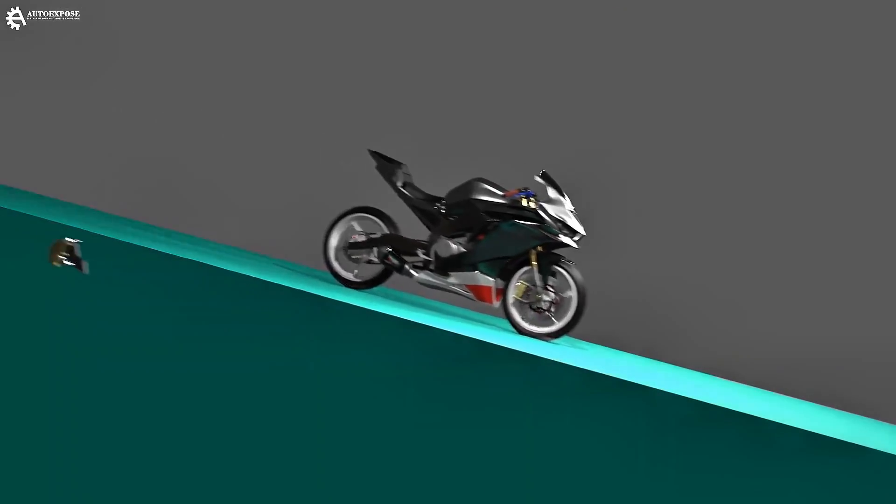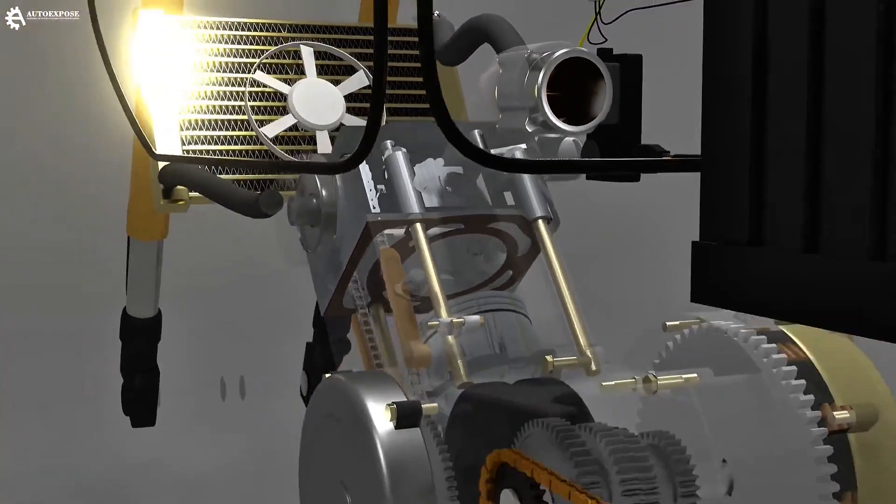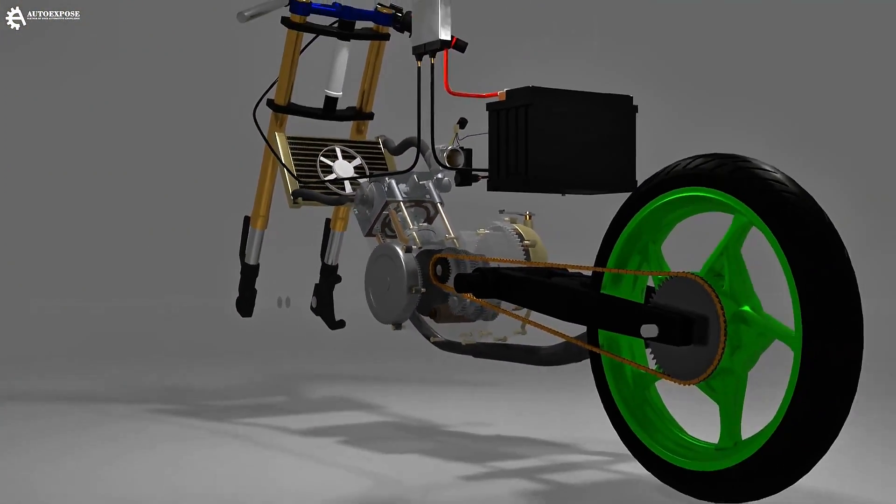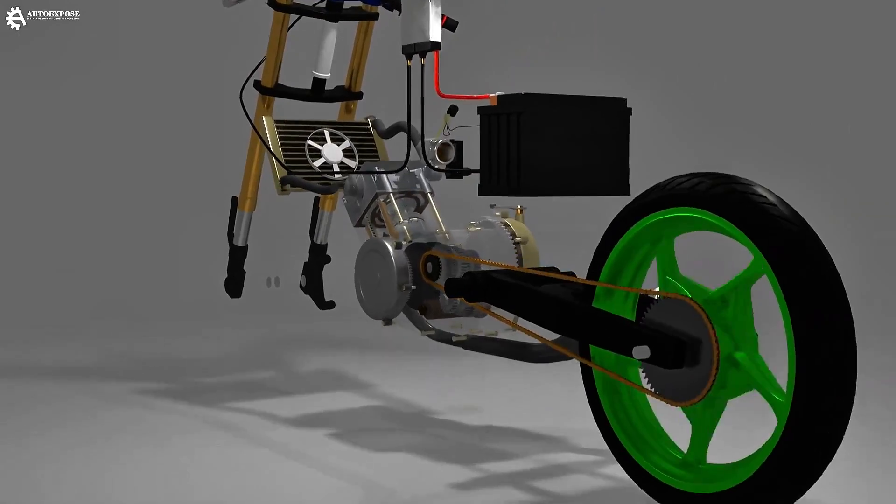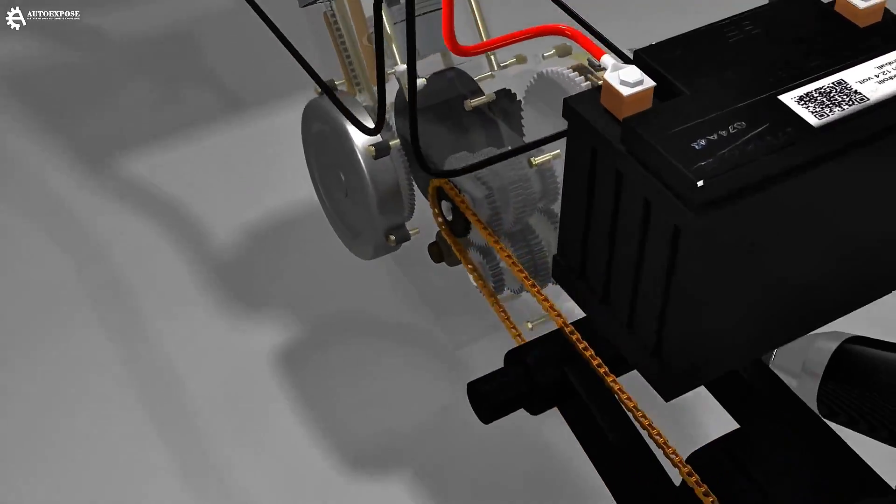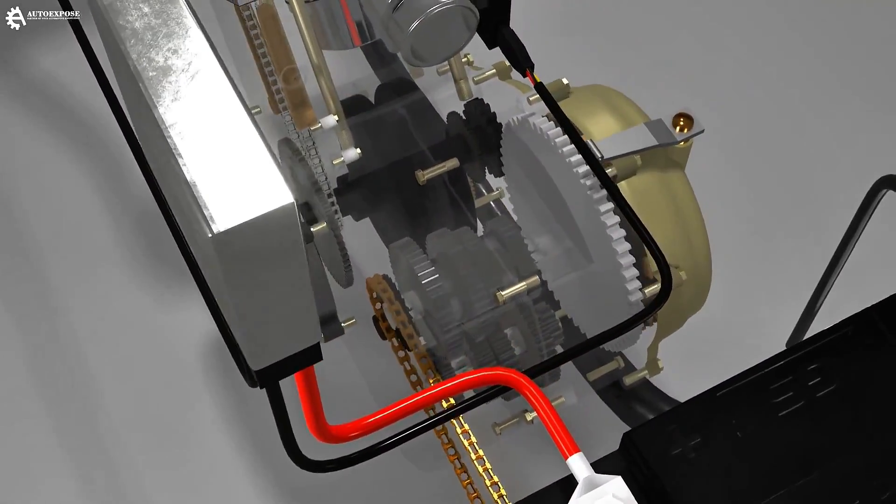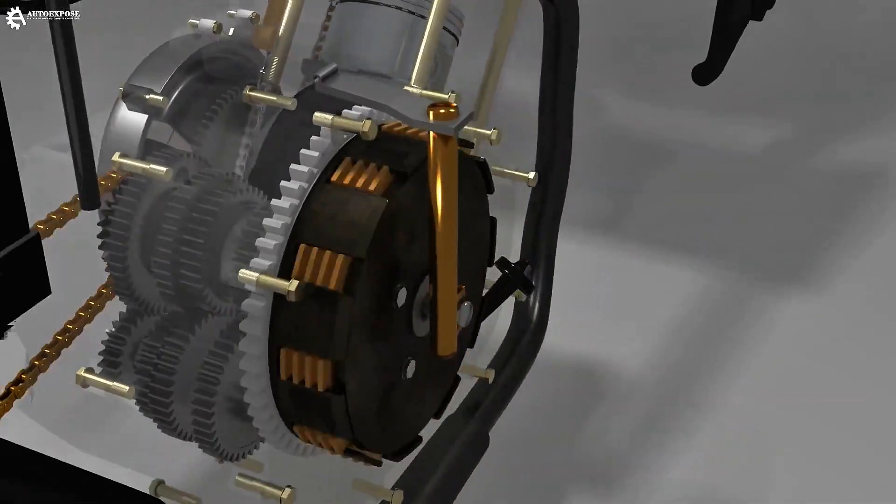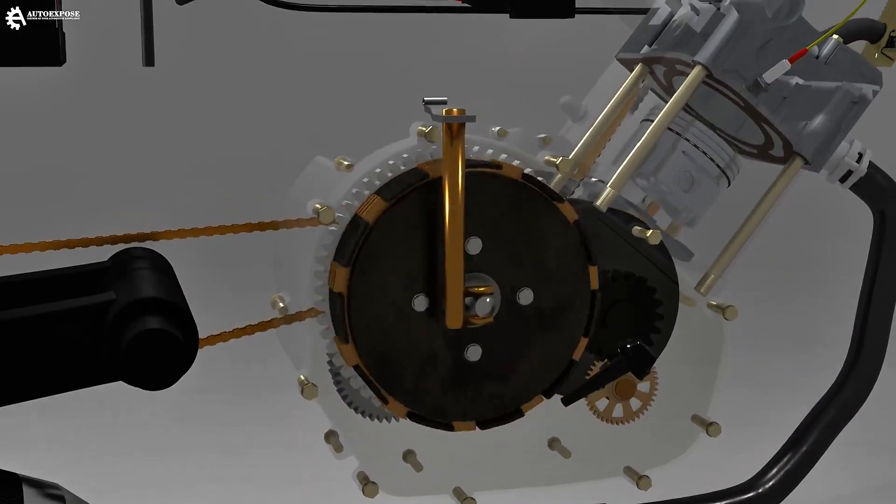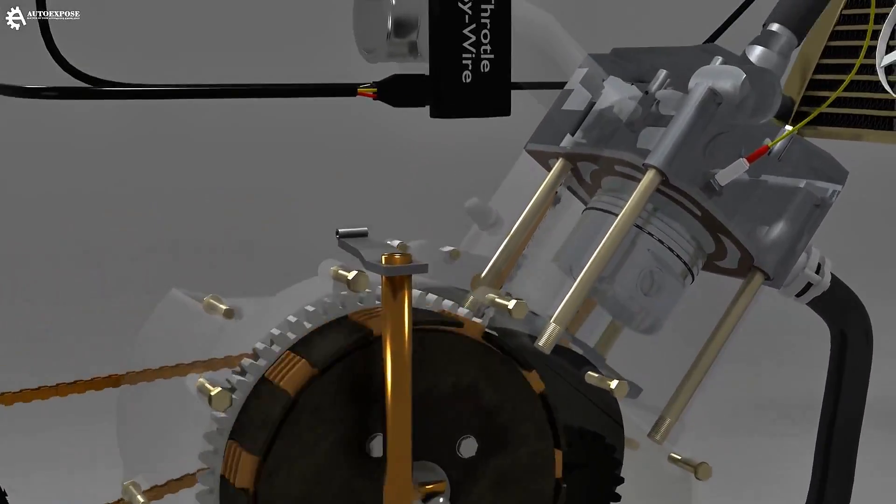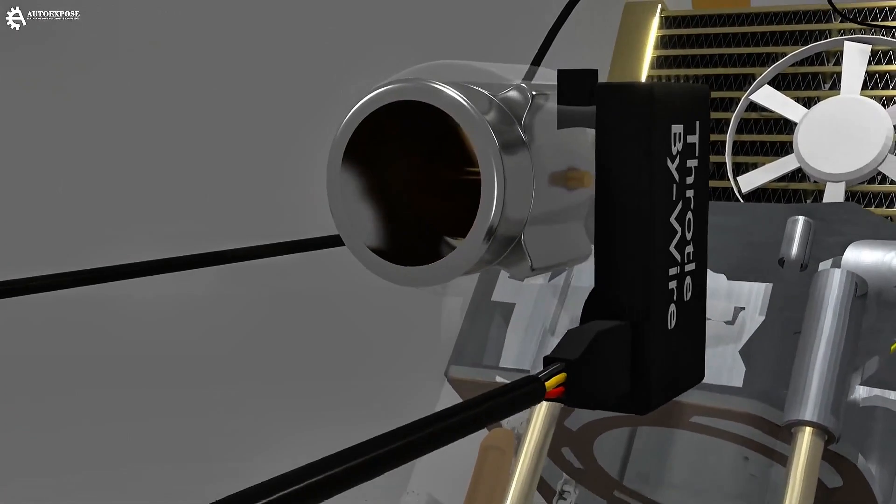When going downhill, the wheels will spin faster. In this position, rotational energy flows from the wheels to the transmission, then to the clutch, and then to the engine crankshaft. Because the rotation is connected to the engine, the rear wheels' rotation is restricted, meaning they are more restrained.